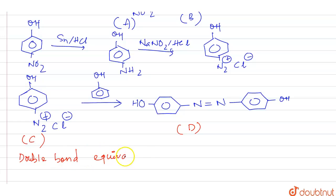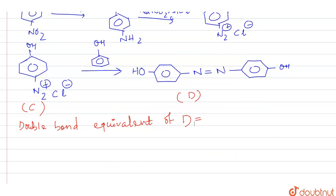Now it is asking that double bond equivalent of D. So how we will be calculating double bond equivalent? Hence there are how many double bonds here? 3, 3, 6, hence 7 double bonds, plus 2 rings are there.